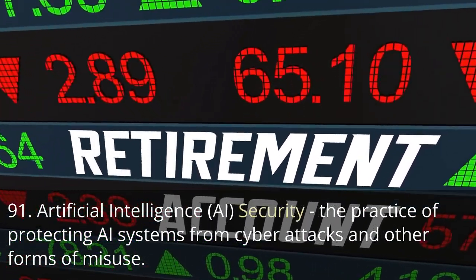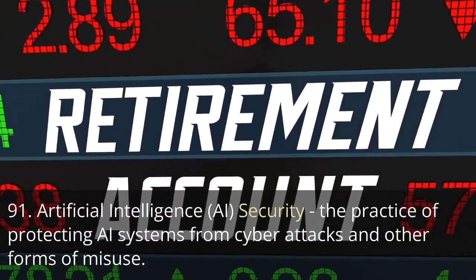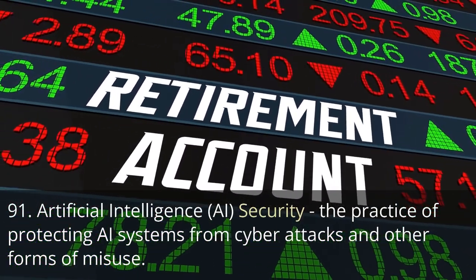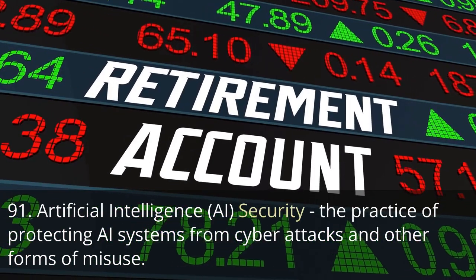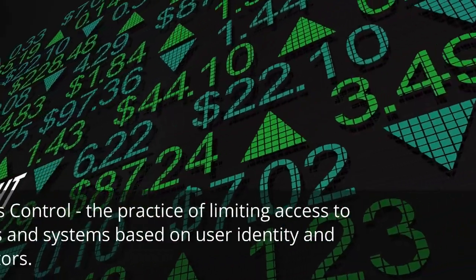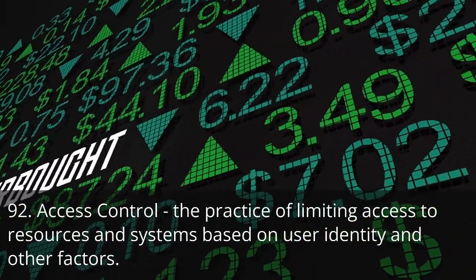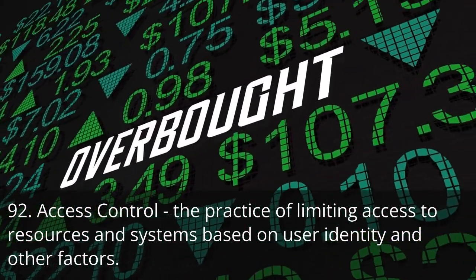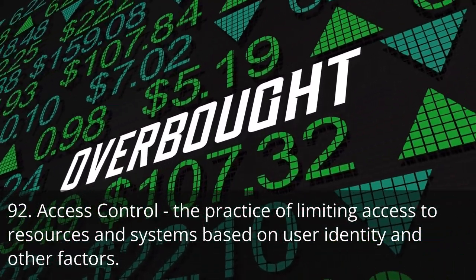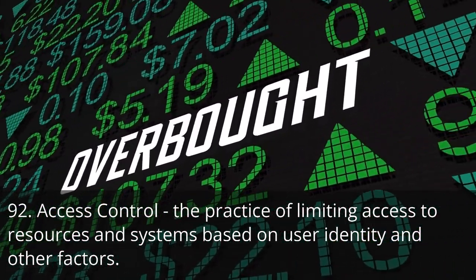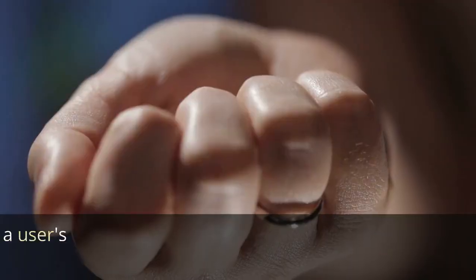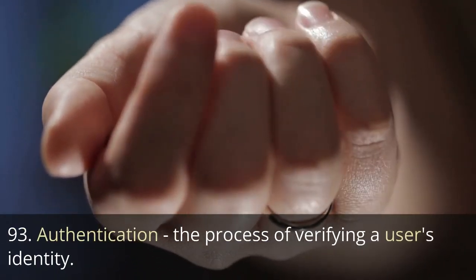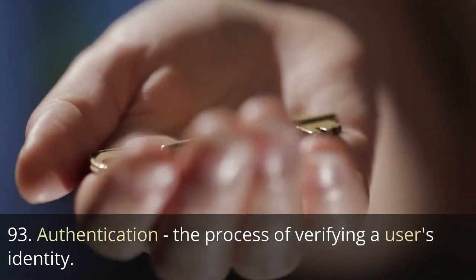Artificial intelligence (AI) security, the practice of protecting AI systems from cyber attacks and other forms of misuse. Access control, the practice of limiting access to resources and systems based on user identity and other factors. Authentication, the process of verifying a user's identity.